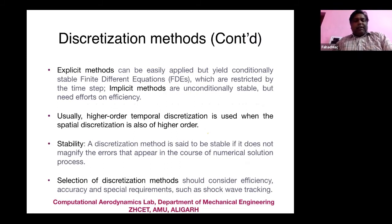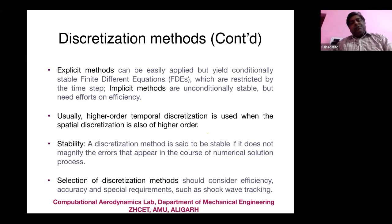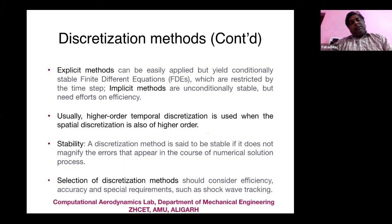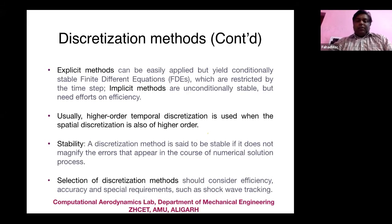In explicit schemes, values at the next time level are calculated entirely from old time-level values. In implicit schemes, both old and new time-step values are used, requiring an implicit system to be solved. There are methodologies to check stability and consistency of these schemes. For compressible flow problems whose equations are of hyperbolic character, the numerical methodology must respect that hyperbolicity.